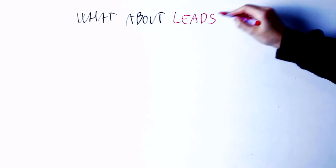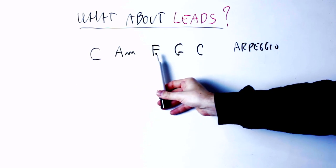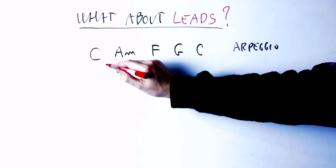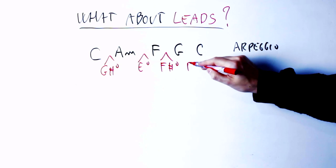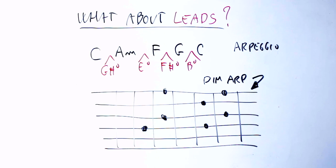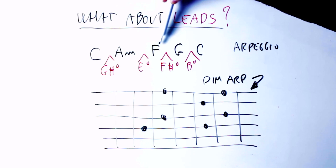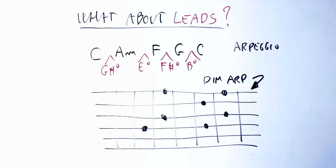What about leads? Here's a simple example. Suppose we take the original chord progression C, A minor, F, G, C, and rather than playing it as chords, we play it as arpeggios, like some neoclassical players or shredders do. The chord progression will sound pretty much like this. We do the exact same thing as before — we put those extra diminished chords in between so that they resolve to the next chord in the progression. Now I'm not playing those diminished chords as chords, I'm playing them as diminished arpeggios. Here is a possible shape for a diminished arpeggio, and here is how the chord progression now sounds.